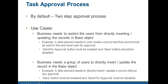The first use case is where the business needs to restrict users from directly inserting or updating records in the base object. Consider you have a data steward and a manager — the data steward has the privilege to only create the record, and it has to be sent to the manager for approval in order to get the data inserted into the system. The data steward needs only the send for approval button enabled; after sending, the manager approves and the data is sent to the system. This use case shows enabling the task approval process.